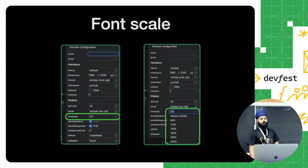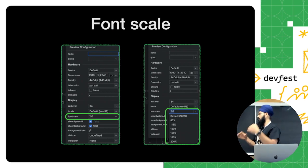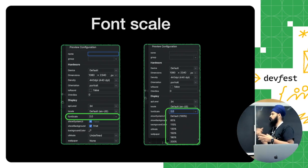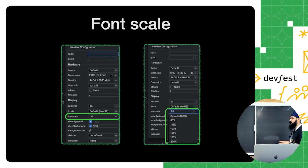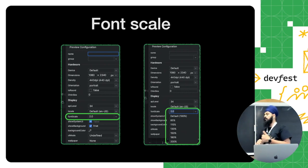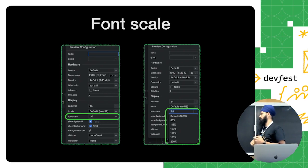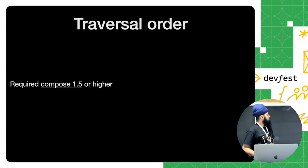If you don't want to write code for preview configuration, there's a settings gutter option that appears next to the preview in the code. When you tap it, it opens the preview configuration window where you can change the font scale. With Android Studio Iguana (the latest in the canary channel), it now also provides support for 200% font scaling, since users can scale font up to 200% in Android 14. You can also customize traversal order in Compose starting with Compose 1.5 — before that there was no support. You just need to update your Compose version to get the new API.